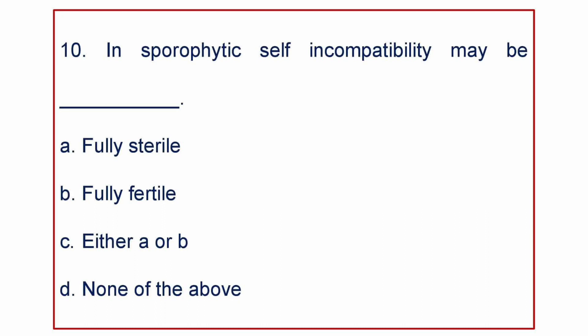Next question. In sporophytic self-incompatibility, crosses may be: A. Fully sterile, B. Fully fertile, C. Either A or B, or D. None of the above. Type the correct answer in the comment section.